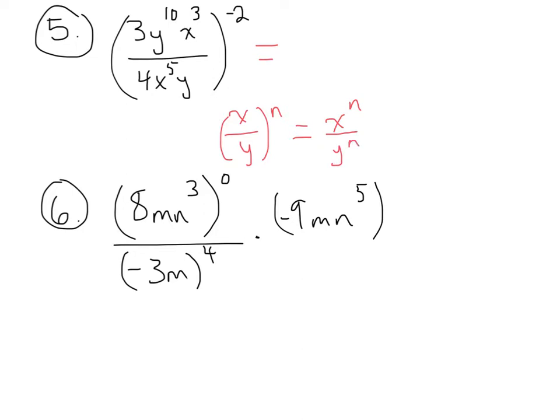What we have here is negative 2 as the exponent and we need to raise every term inside the parentheses to the negative 2 exponent. So I'm going to do that very carefully. I'm first going to write 3 to the negative 2. Then y to the 10 to the negative 2 is y to the negative 20. Then x to the 3 to the negative 2 is x to the negative 6.